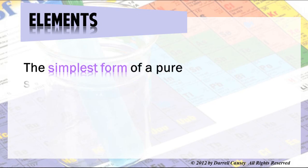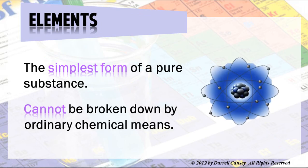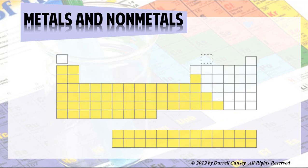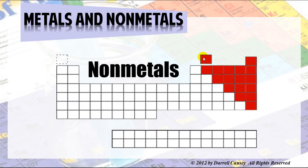Elements are the simplest form of a pure substance and cannot be broken down by ordinary chemical means. Elements can be divided into two main groups: metals and non-metals. Notice hydrogen over here — hydrogen is a non-metal. That placement has to do with its quantum mechanics and configuration, which we'll learn about later. You need to start thinking about hydrogen as a non-metal. It's much more like carbon, nitrogen, and oxygen than it is like lithium, beryllium, and those types of metals.